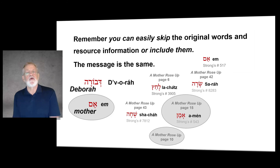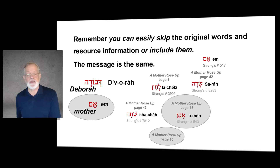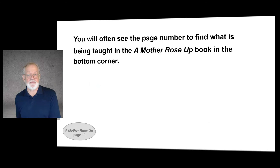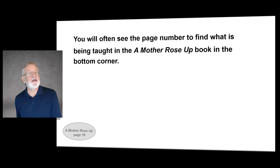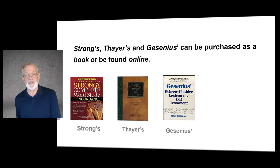Remember, you can easily skip the original words and resource information or include them — the message is the same. You will often see the page number defining what is being taught in the A Mother Rose Up book in the bottom corner, such as A Mother Rose Up, page 10.